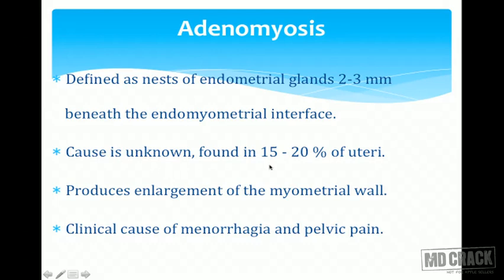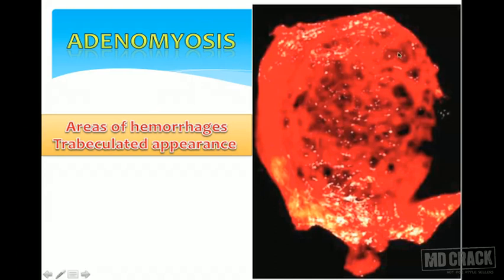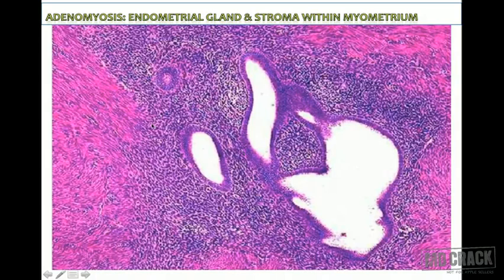Adenomyosis is seen in 15 to 20 percent of hysterectomy specimens. It produces enlargement of the myometrial wall and patients clinically present with menorrhagia and chronic pelvic pain. The classical appearance is a trabeculated pattern with areas of hemorrhage, as the glands within the myometrium also bleed during menses. To diagnose adenomyosis, you must see both endometrial glands and accompanying endometrial stroma, at least one low-power field beneath the endometrial interface.